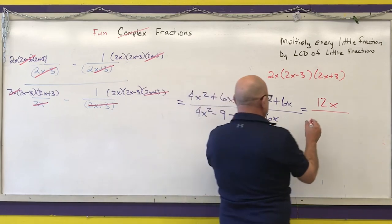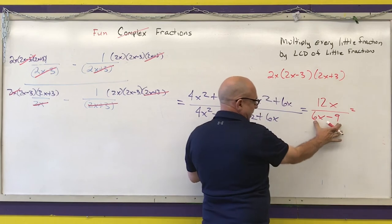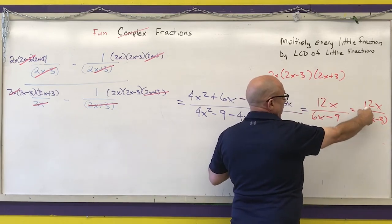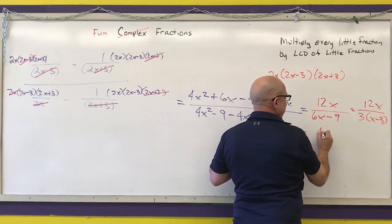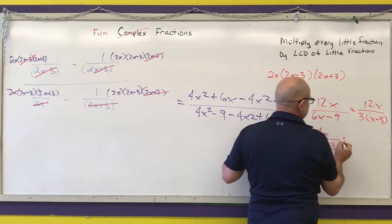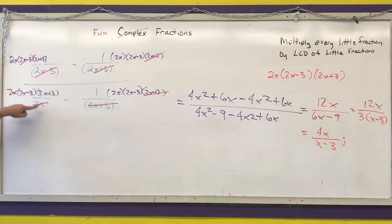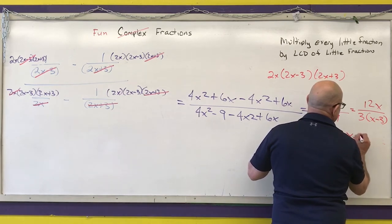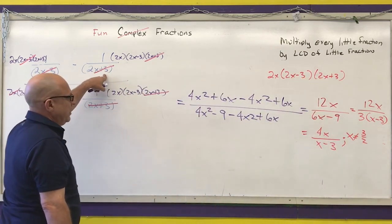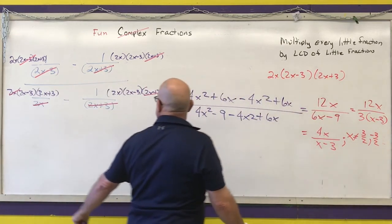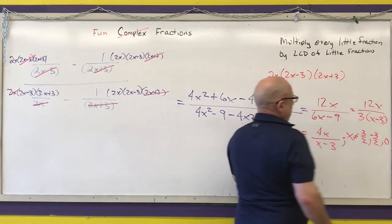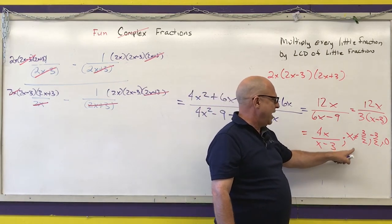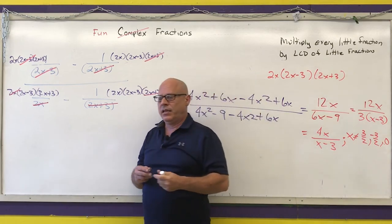Factoring the denominator gives 3 times x minus 3, so I have 12x over 3 times x minus 3. Simplifying, 3 goes into 12 four times, leaving 4x over x minus 3. The restrictions are: x cannot equal 3 halves, x cannot equal negative 3 halves, and x cannot equal 0. So this original complex fraction simplified is 4x over x minus 3, provided x is not equal to plus or minus 3 halves or 0.